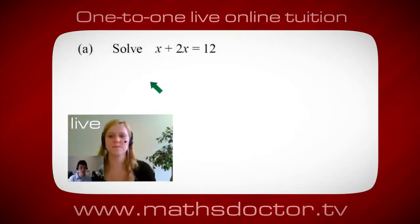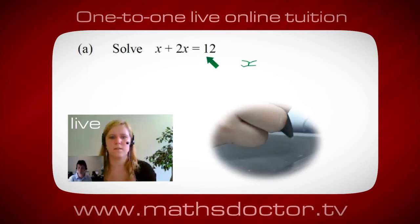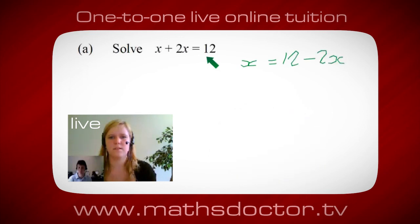So, let's have a look at this one. Solve x plus 2x equals 12. So, what do you think you do first? Well, I want x on its own. So, I would put x equals 12 minus 2x.